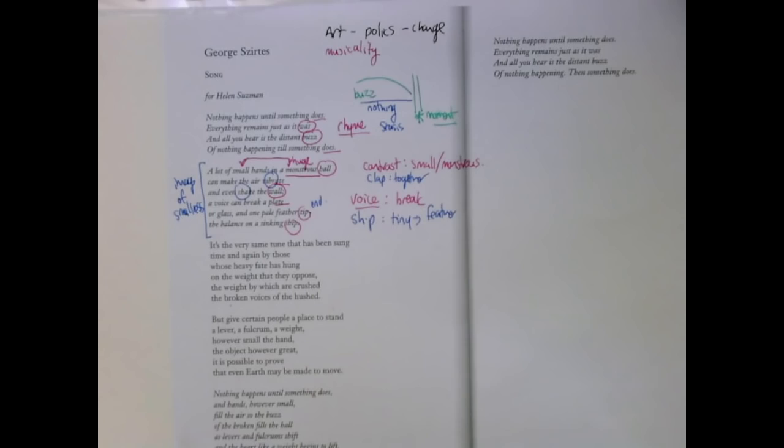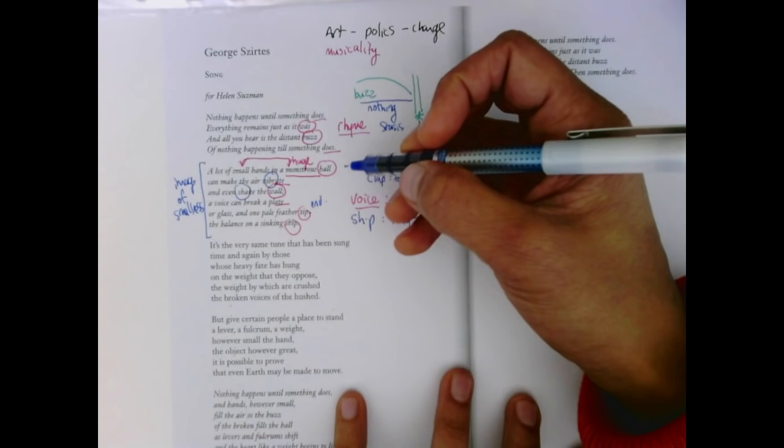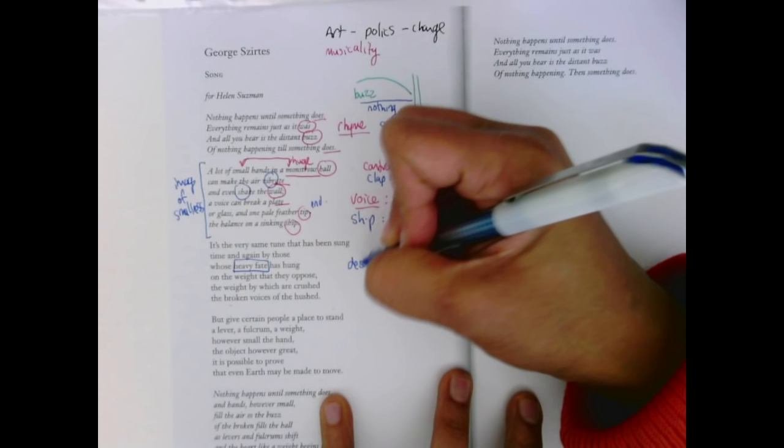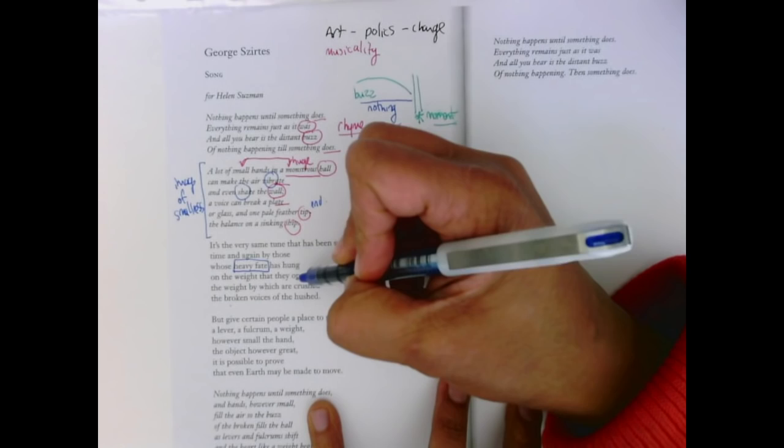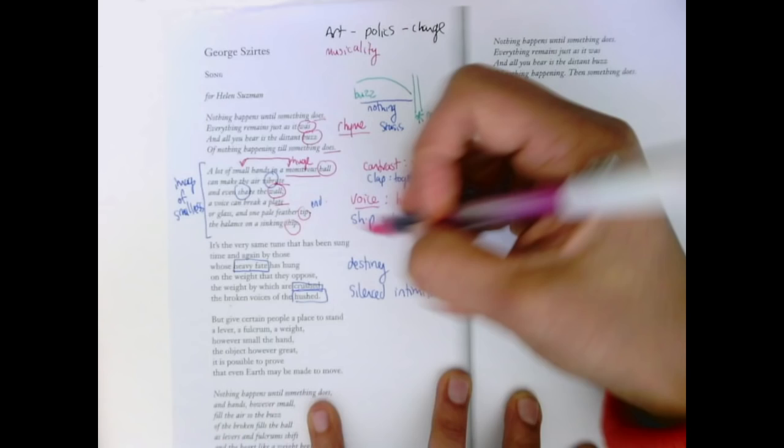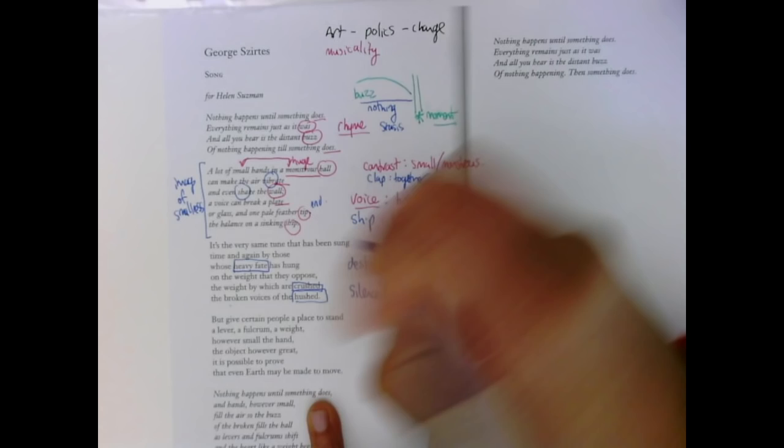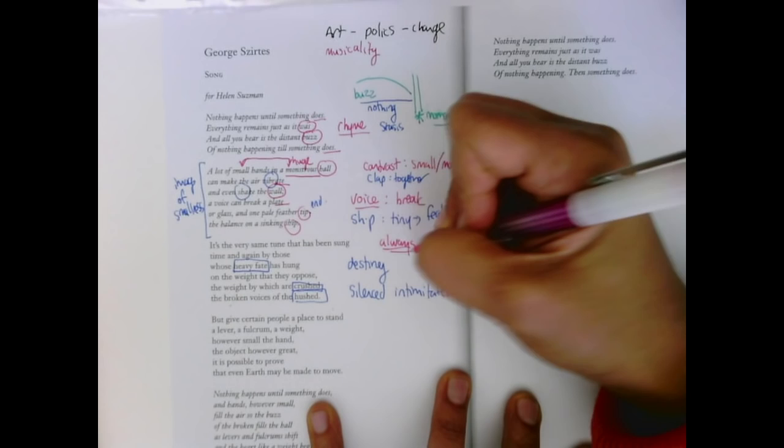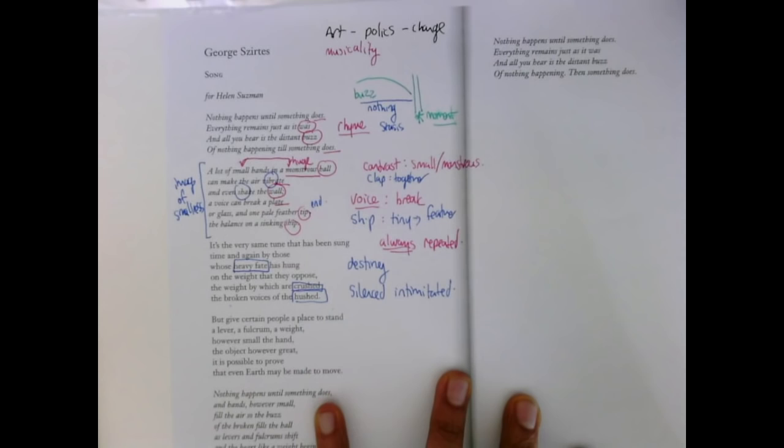All of this is in italics because it's the refrain, the thing that we go back to, the thing that we repeat. It's the idea that is repeated in this song, and it's what we come back to at the end. It's the very same tune that has been sung time and again by those whose heavy fate was hung on the weight that they oppose, the weight by which are crushed the broken voices of the hushed. This heaviness, this heavy destiny, the heavy destiny of people who are broken and quieted, silenced. Silenced, intimidated people have always had this song, always repeated this idea.